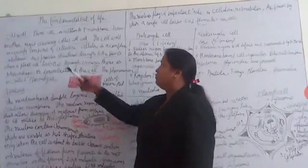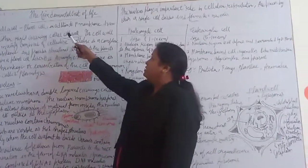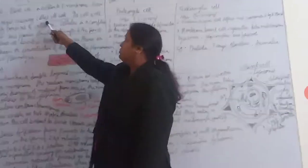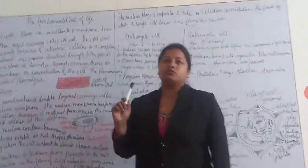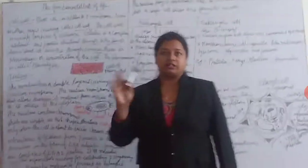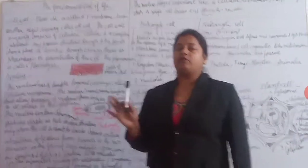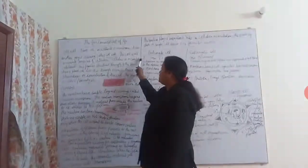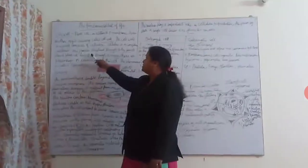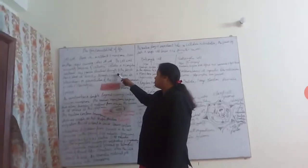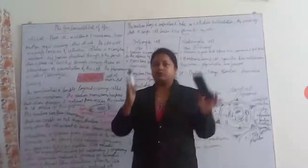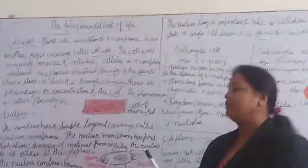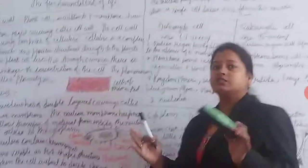Now look at the cell wall. The plant cell, in addition to the plasma membrane, has a rigid cover called the cell wall. So we can see that the outside of the plant body is covered by a cell wall. Cellulose is a complex substance and provides structural strength to the plants.